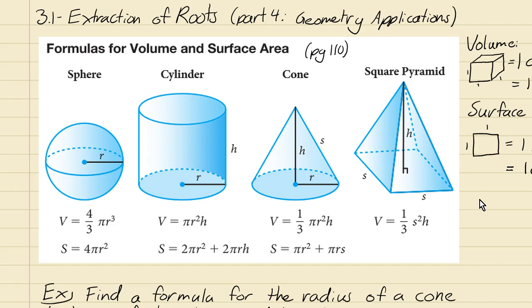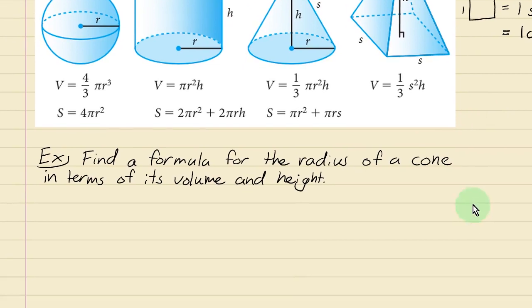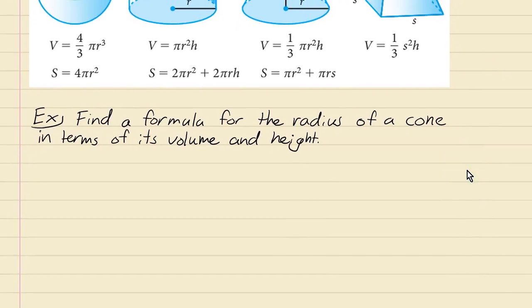So let's do an example here. Let's find a formula for the radius of a cone in terms of its volume and height. So what this means is if we want a formula for the radius, that means it should look like r equals something.